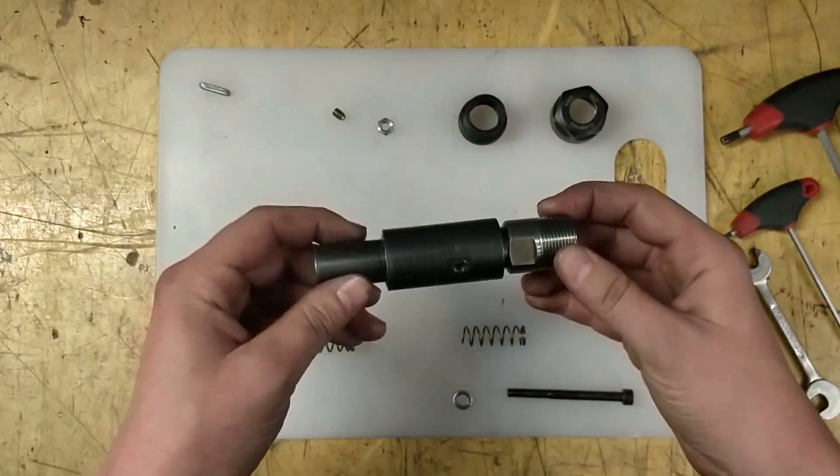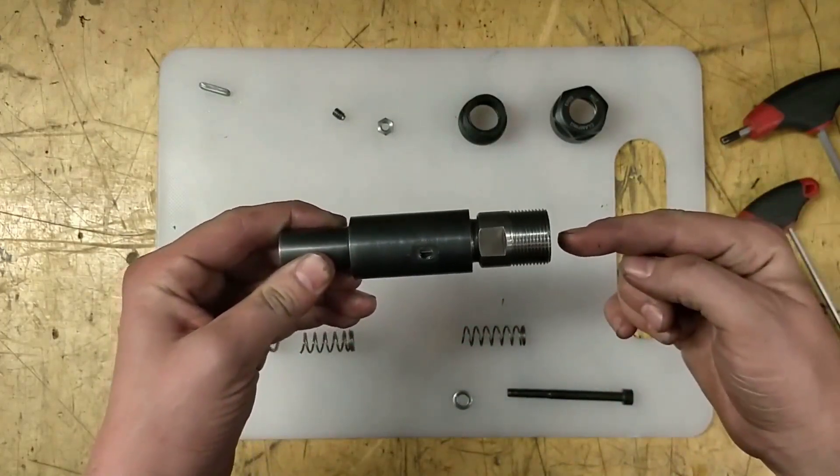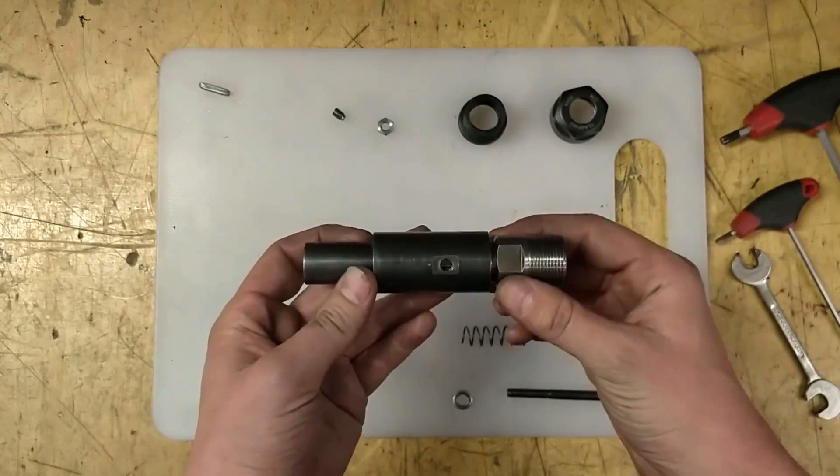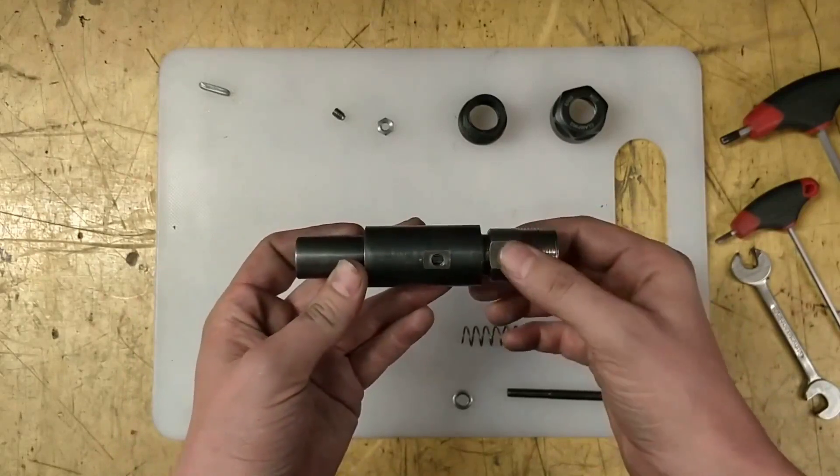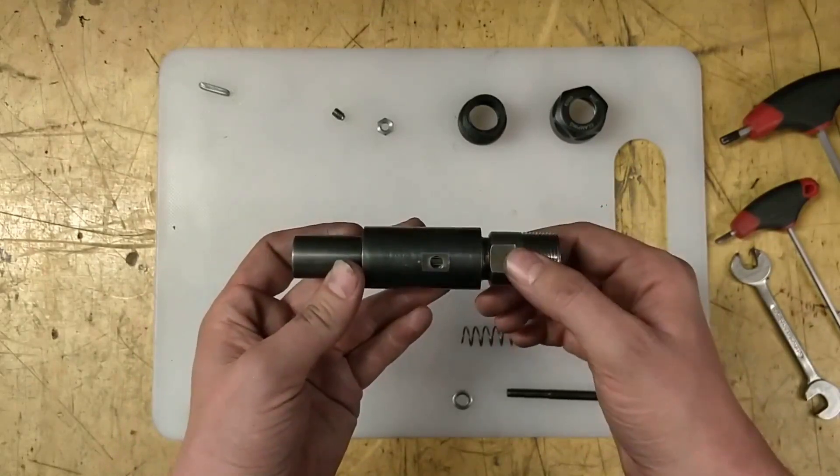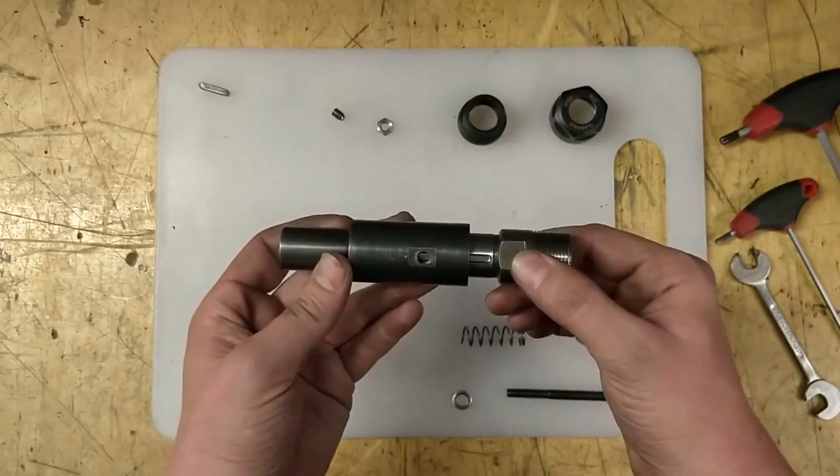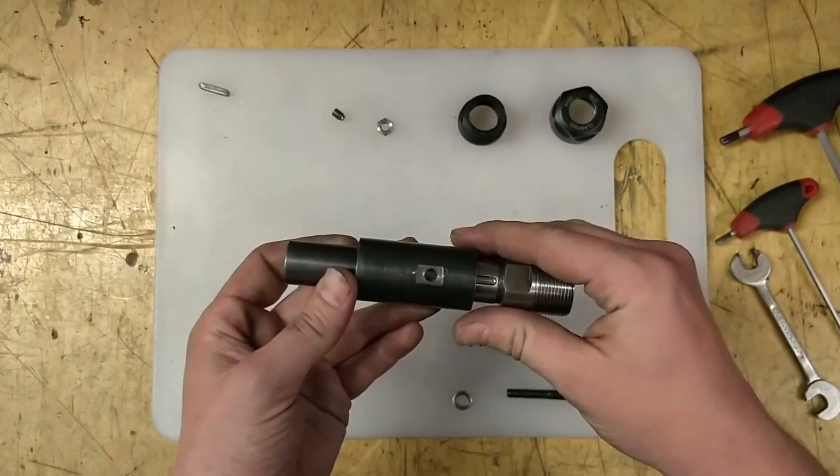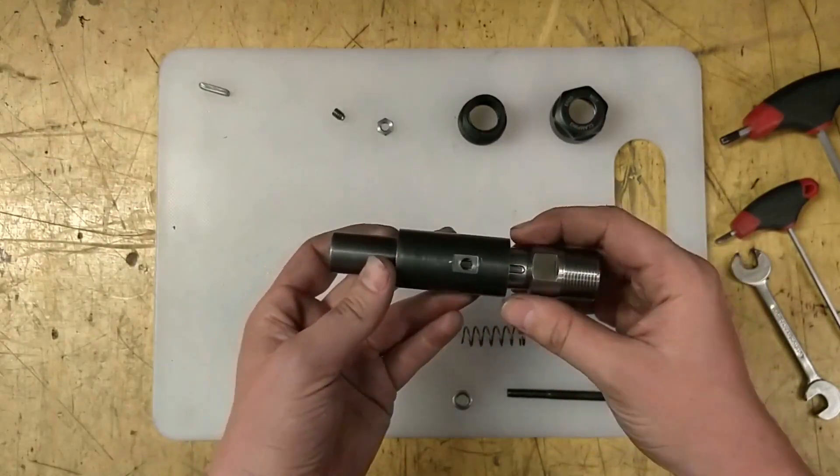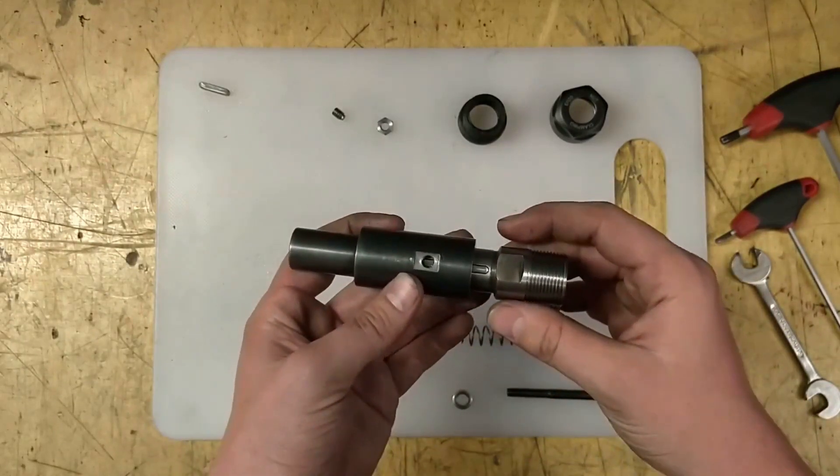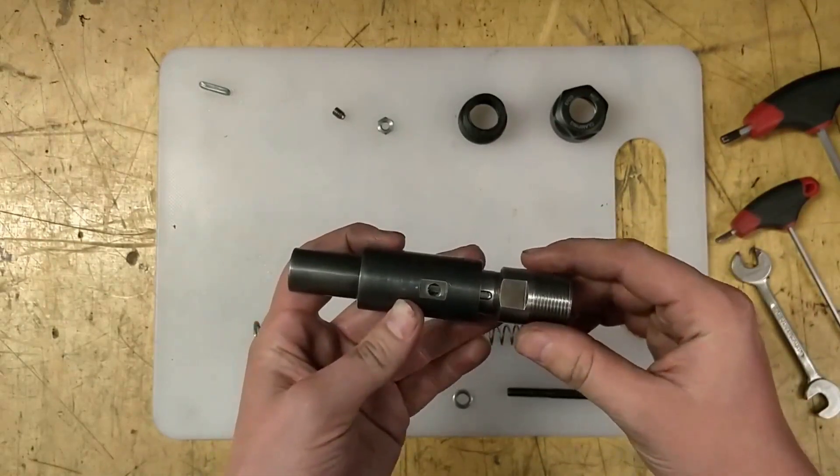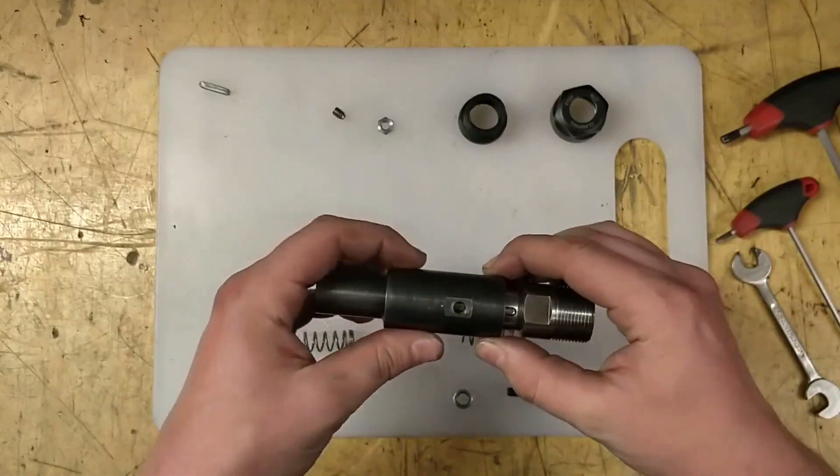The ER collet will go in here, and this will go in the spindle. Here we will put in the tap, and it allows the ER collet to just move in this direction axial but not radial, so it can compensate any pitch errors introduced by wrong feedback of the encoder.